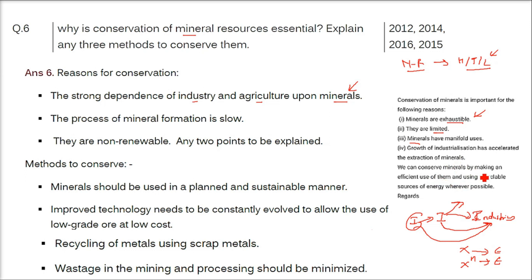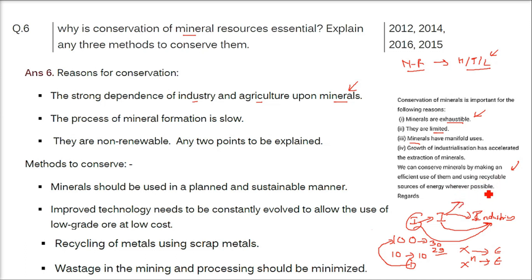To conserve minerals, we can make efficient use of them. For example, if you have 100 rupees in your pocket for 30 days, you have to spend judiciously — you cannot spend all 100 rupees on day one. The same principle applies here. Also, using recyclable sources of energy whenever possible is helpful, along with going for traditional renewable sources of energy.